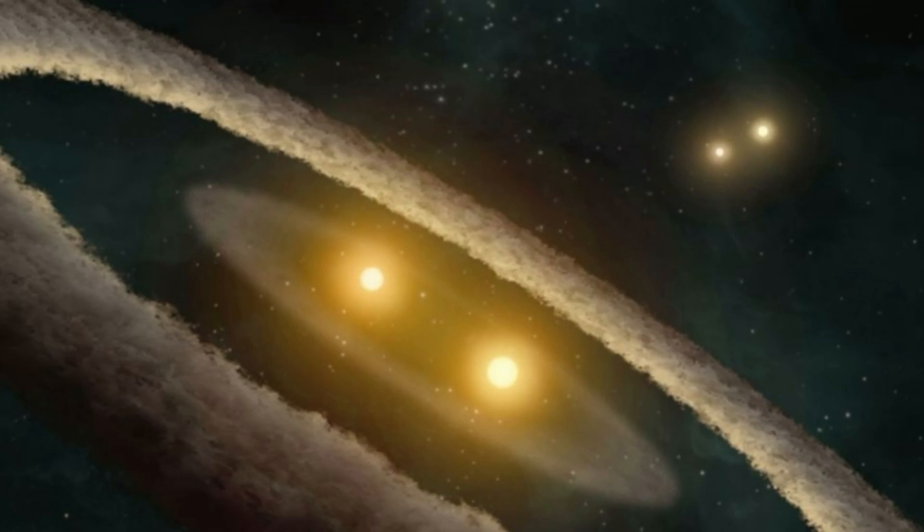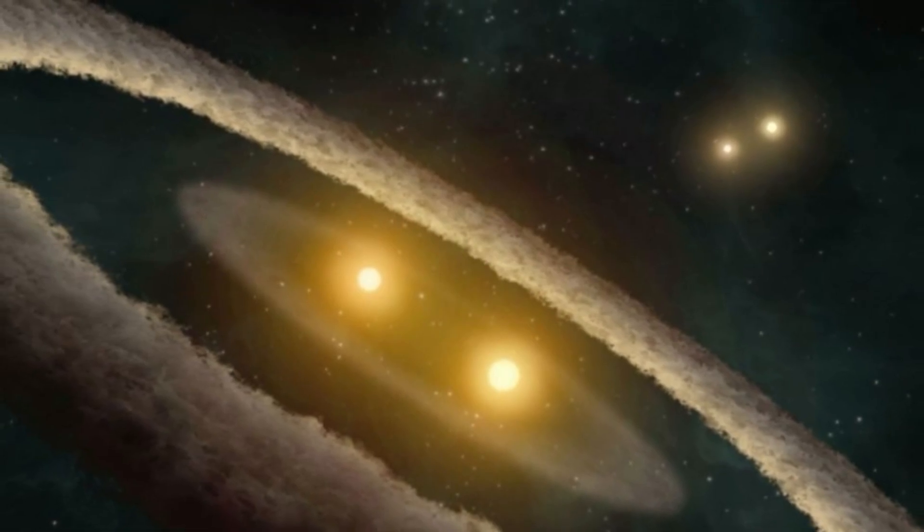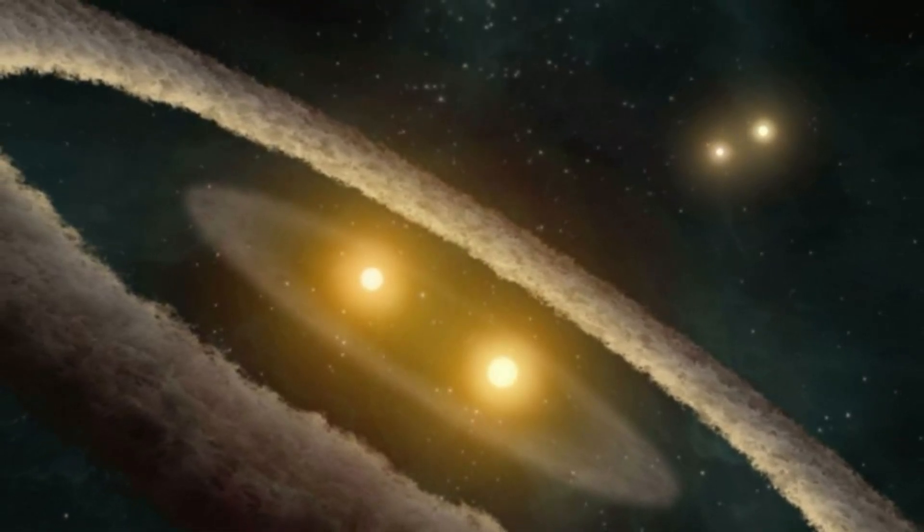The triple, or tertiary, star system is known as TIC 470710327 and was detected by researchers using data from NASA's Transiting Exoplanet Survey Satellite observatory that's orbiting Earth.